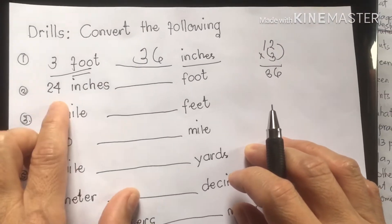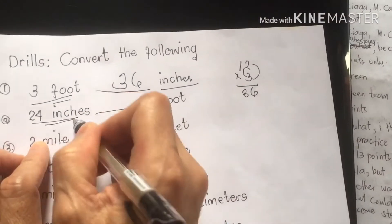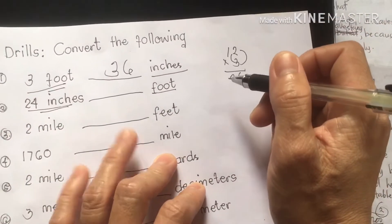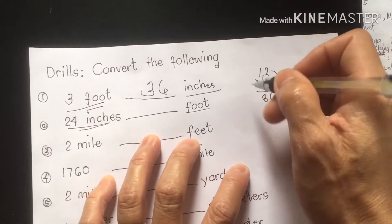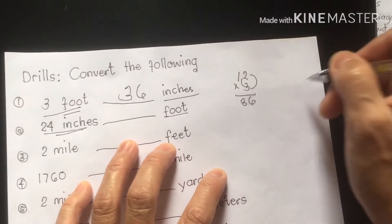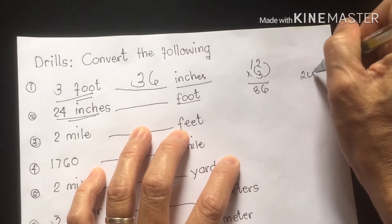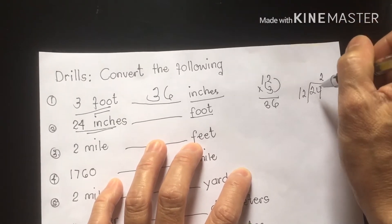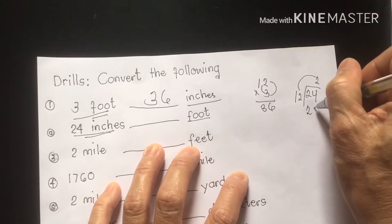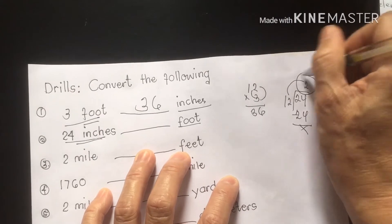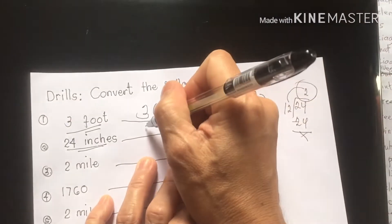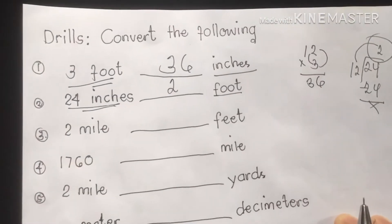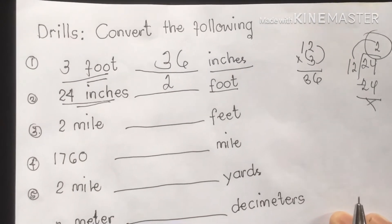Next, number 2: 24 inches to feet. Remember, in 1 foot we have 12 inches, so we are going to divide it. 24 divided by 12: 2 times 12 is 24. Therefore our answer is 2 feet. 24 inches is equivalent to 2 feet.